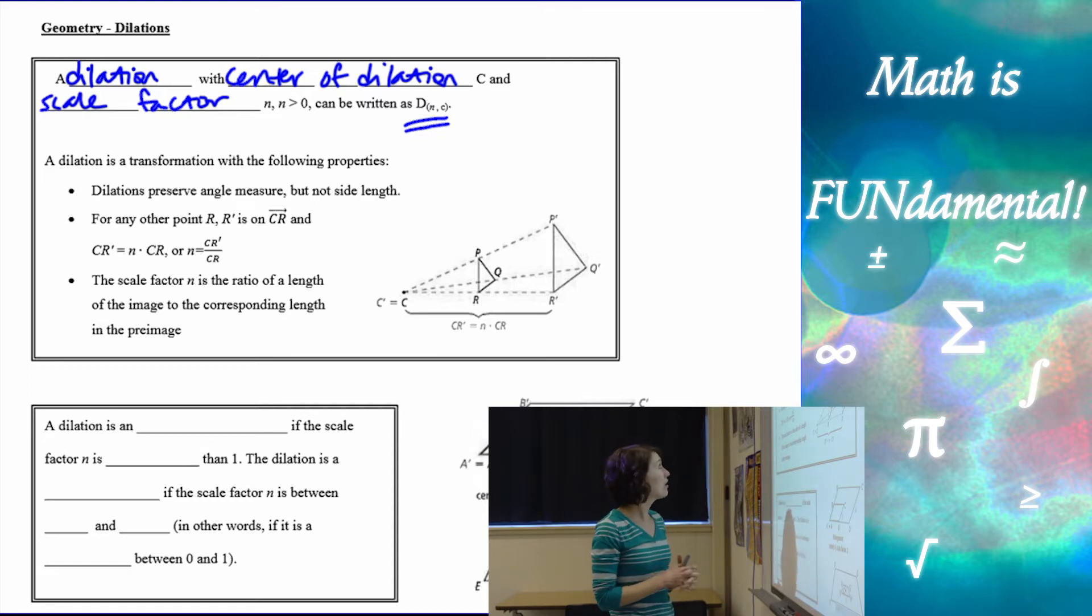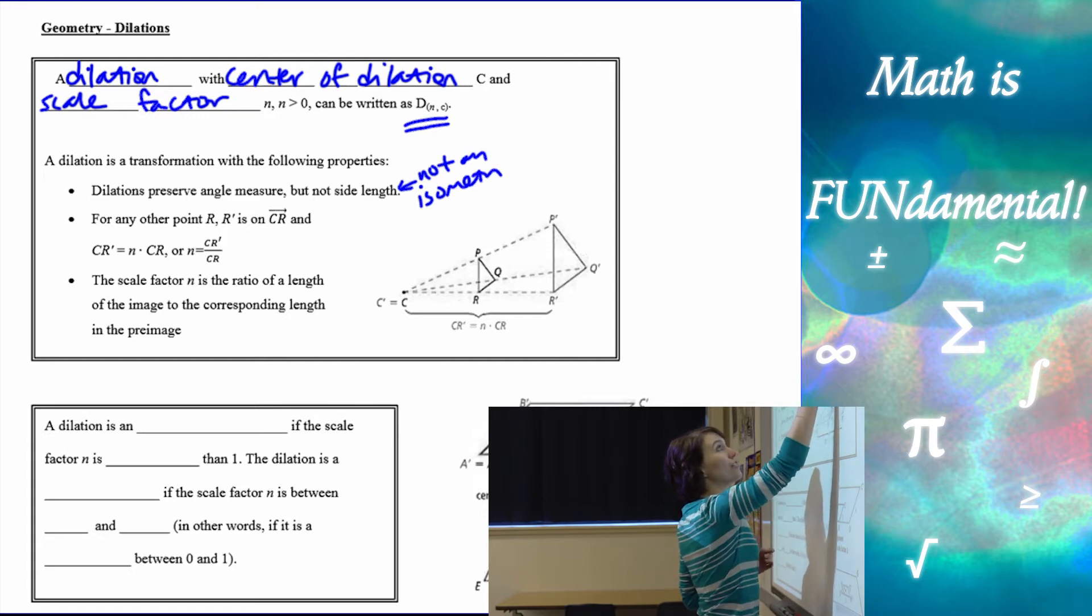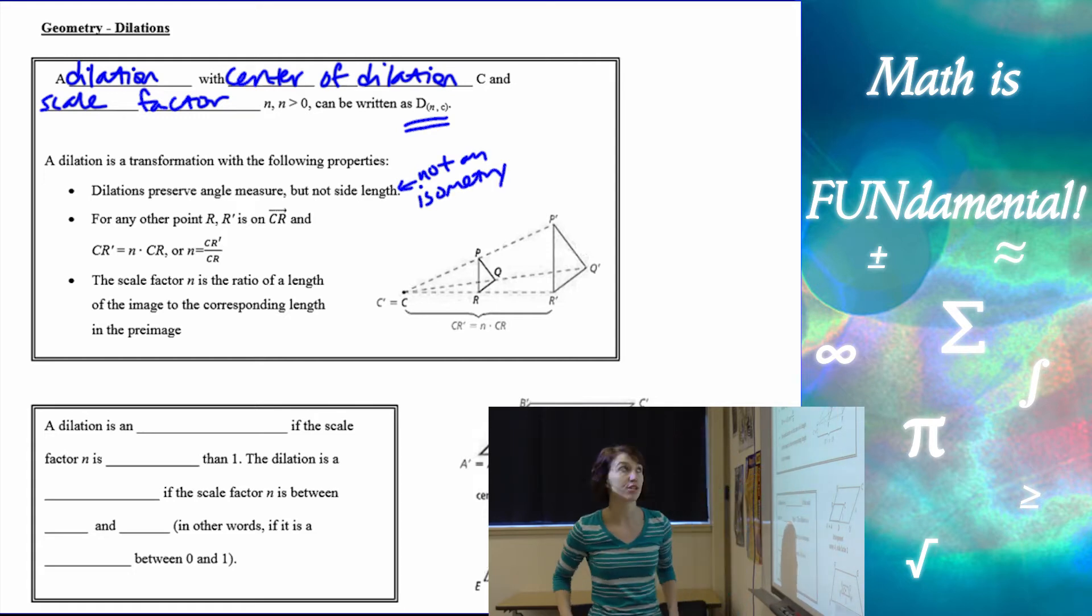A dilation has the following properties. It preserves angle measure but not side length, which means it's not an isometry or rigid motion because it doesn't preserve side length.